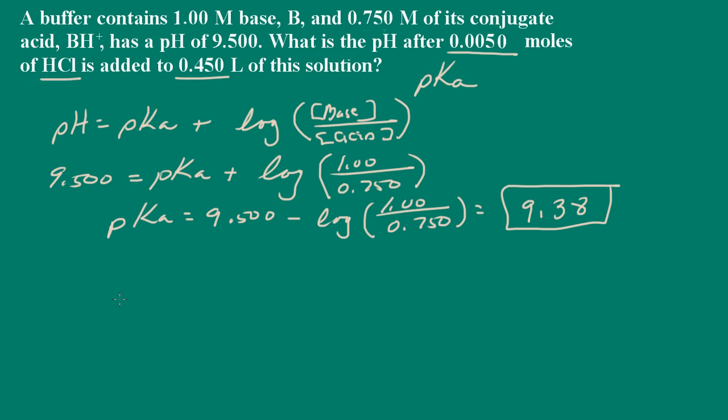So now what we need to do is determine how much of the base is reacted by the acid. And then let's go ahead and first find the moles of all species involved. So we're given the moles of hydrochloric acid and that's 0.005 moles.